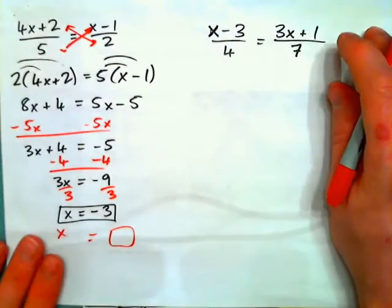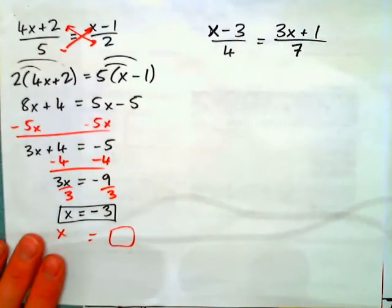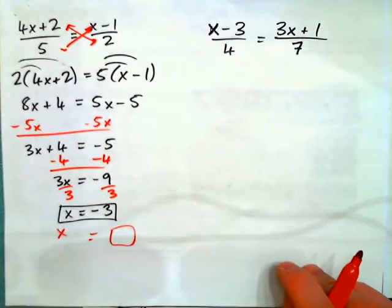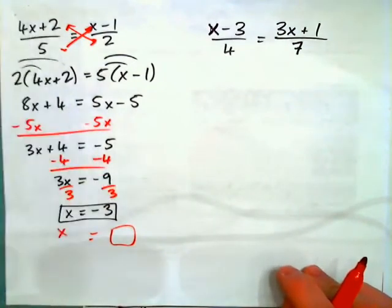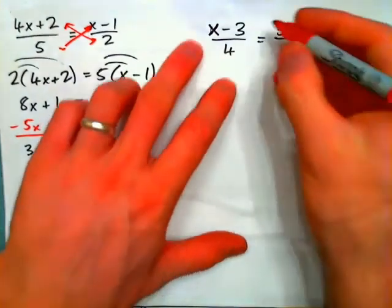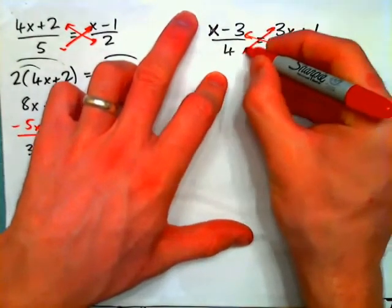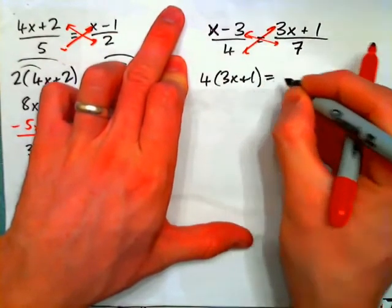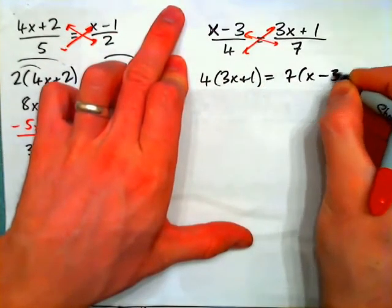And please press pause now and do this example. Press pause and do this example here. And you should get x is negative 5 on this one. So, if I cross multiply, I'll get 4 times 3x plus 1 equals 7 times x minus 3.